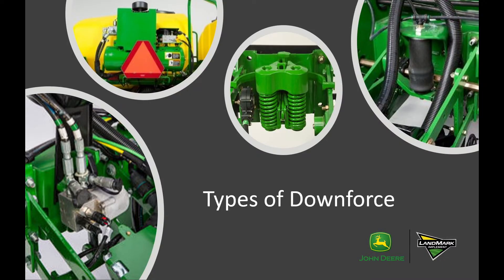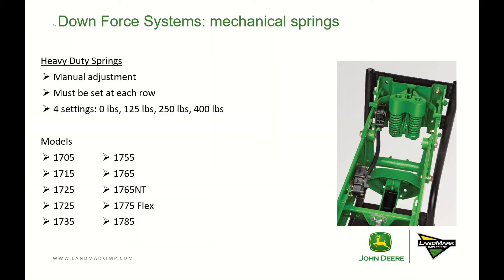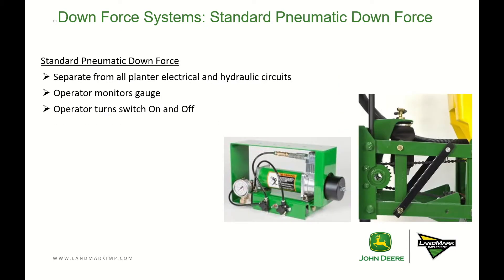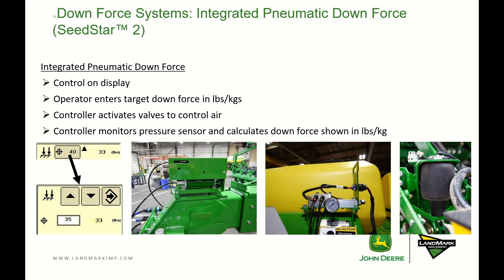Now we'll go through the types of downforce available. We still offer mechanical springs on a limited number of planters with four settings. We have pneumatic downforce — an airbag on each row — with infinite settings between 0 and 400 pounds. It can be standard or integrated with the display. If standard, you set the compressor knob and the operator turns the switch on and off and monitors the gauge.